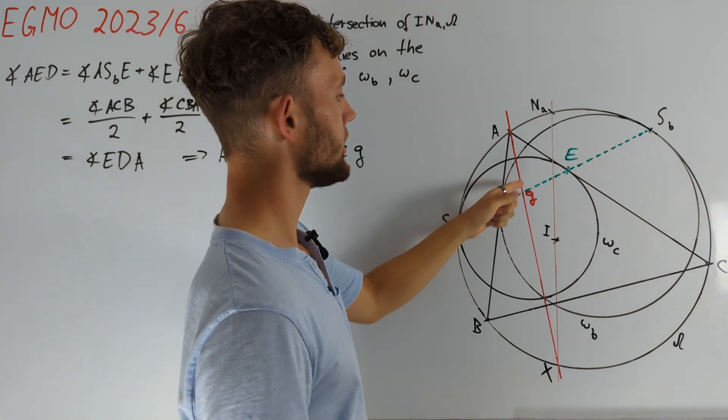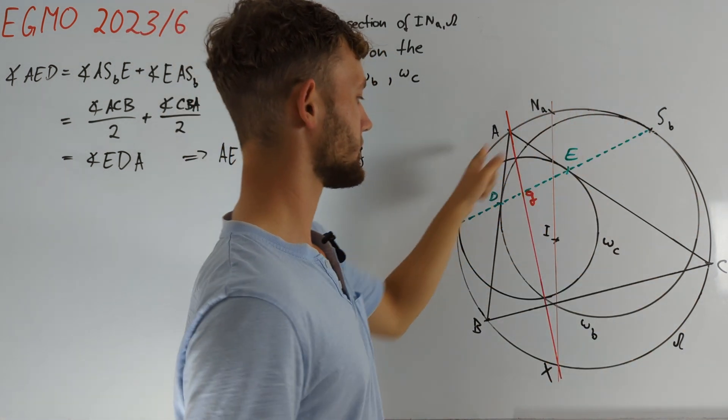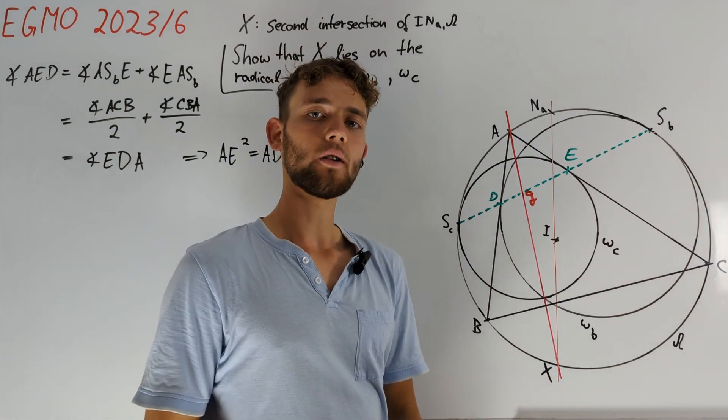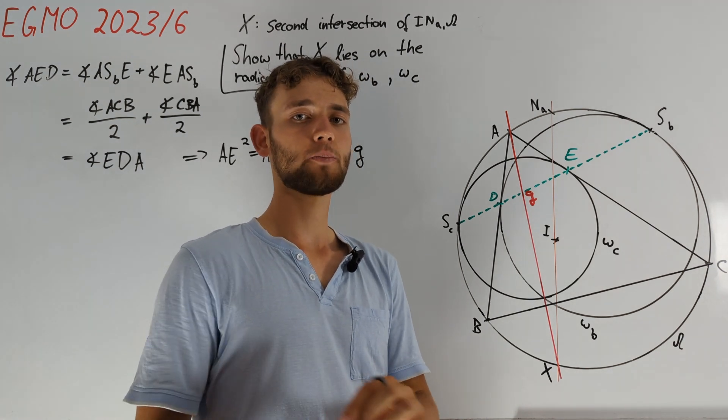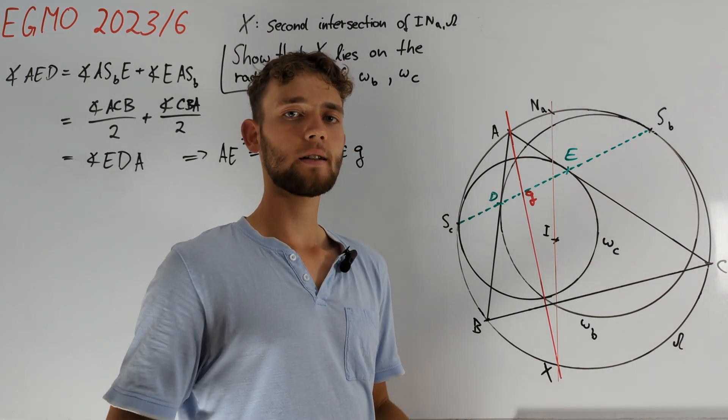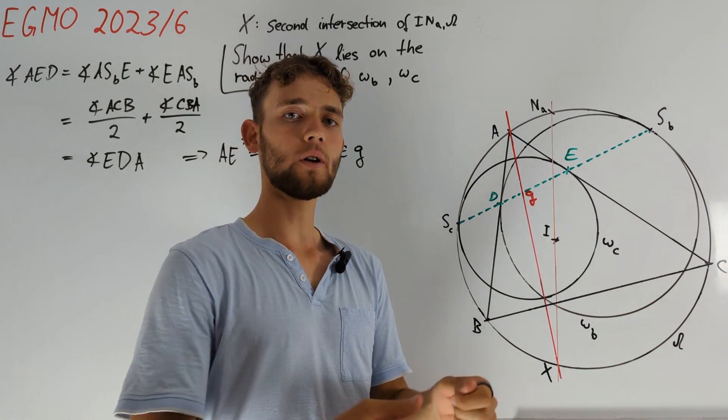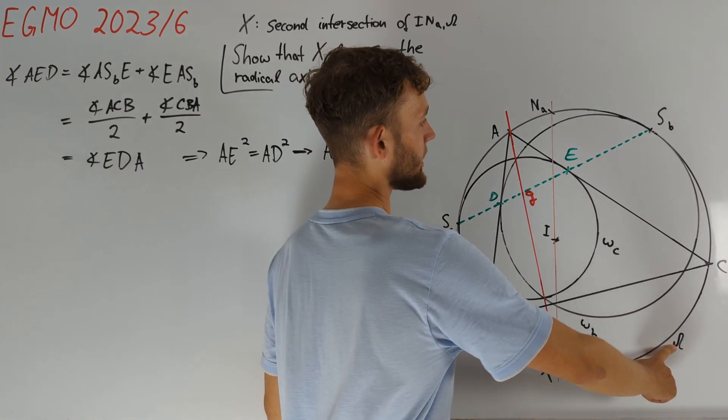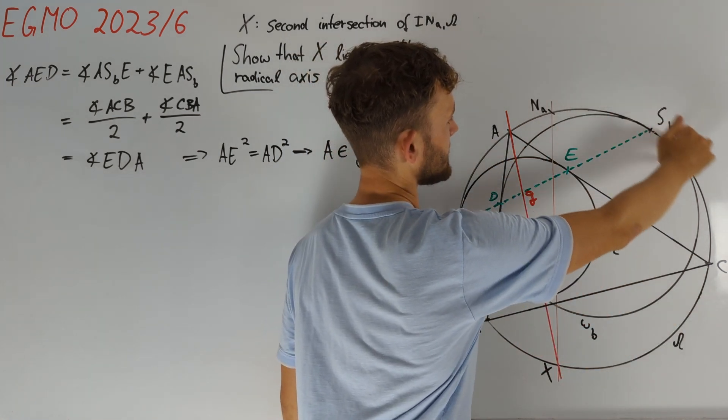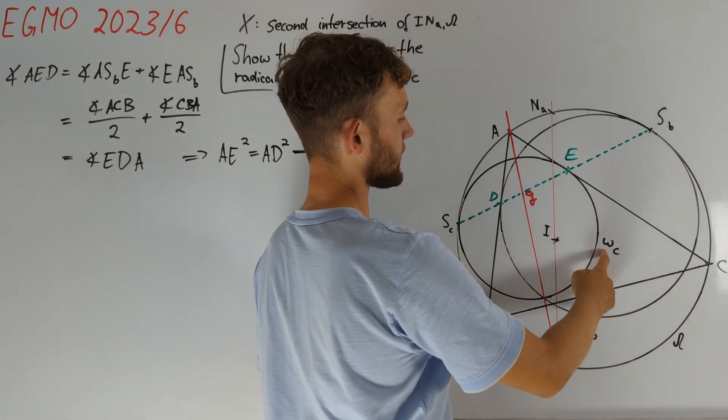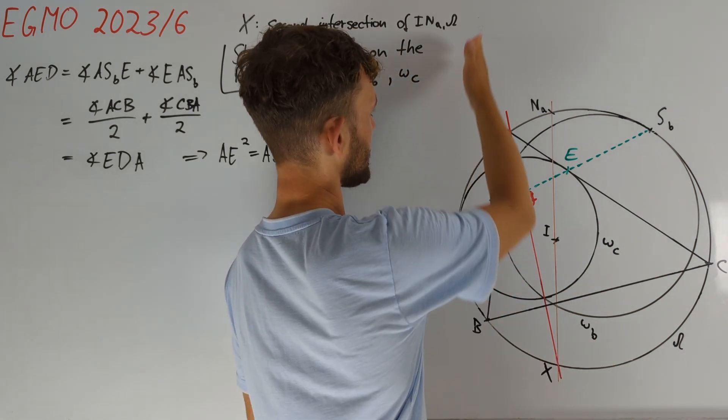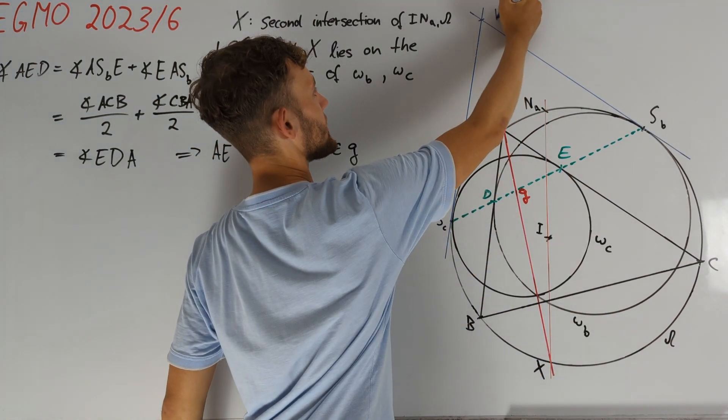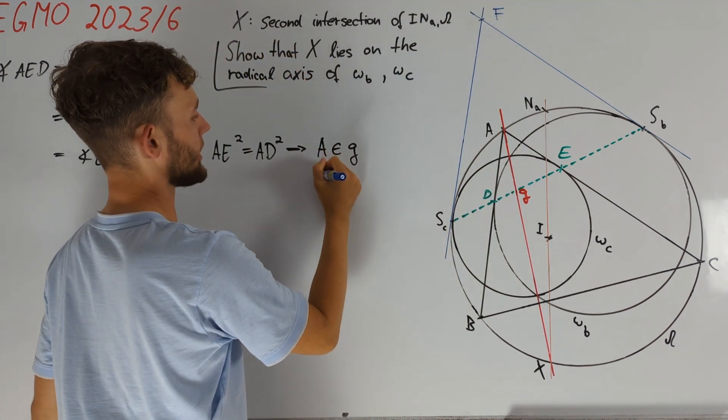To obtain another point on G, we notice that we do have a third circle, omega, that has nice relationships to omega_B and omega_C. And we recall that if we have three circles and consider for each pair of them their radical axis, then the intersection of two of those radical axes will lie inside of the third one. The radical axis of omega_B and omega is just their common tangent at SB. And similarly, the radical axis of omega_C and omega is their common tangent at SC. So, let us draw these two lines in. By the previous fact, we obtained that the intersection F must also lie on the line G.